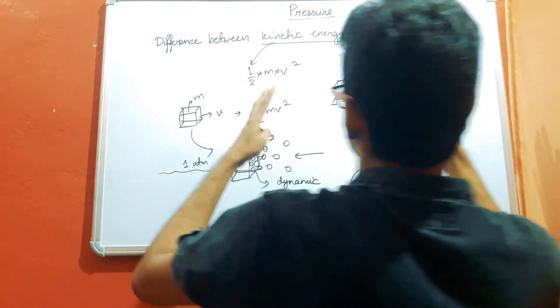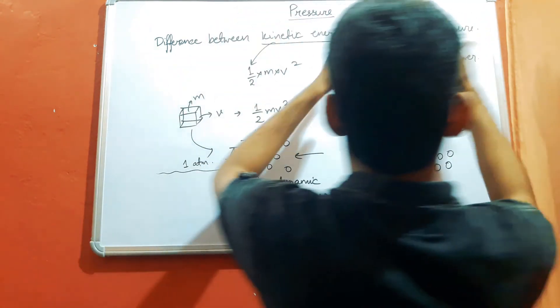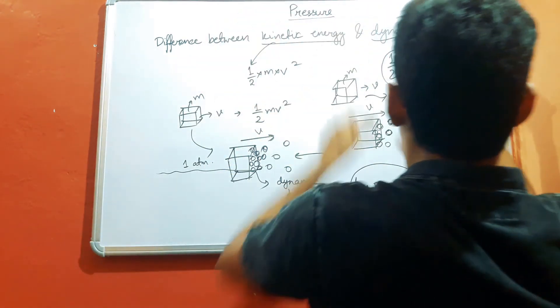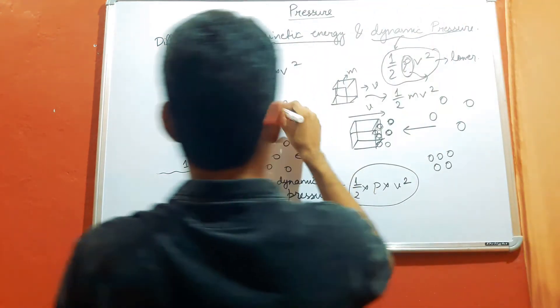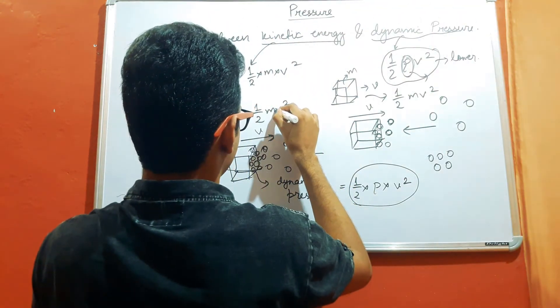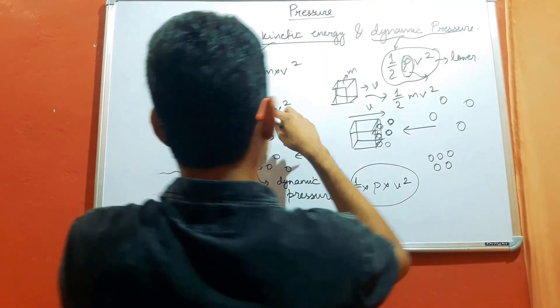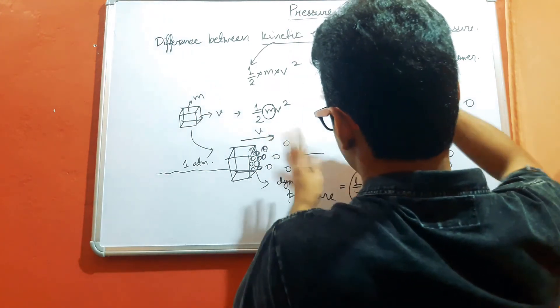So with the same kinetic energy, we have seen that the dynamic pressures are different at two different altitudes. That is basically the significance of density in the term dynamic pressure. But in the case of kinetic energy, the mass is there, so it will be the same disregarding the altitude.